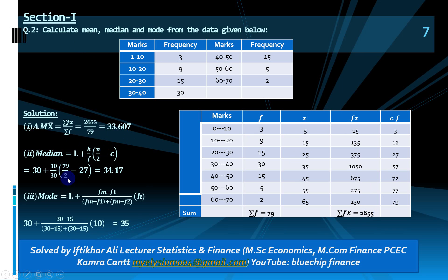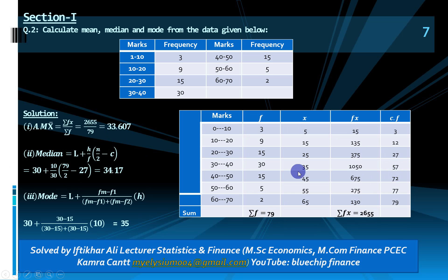Calculate n/2: 79 divided by 2 equals 39.5. Locate the median class — 39.5 falls in the cumulative frequency of 57, so this is your median class. C will be 27 (cumulative frequency before the median class), L will be 30, h is 10, f is 30, and n/2 is 39.5 minus 27. So median = 34.17.